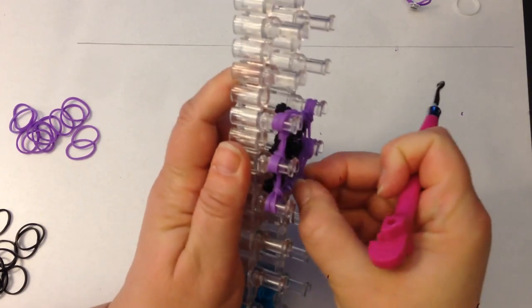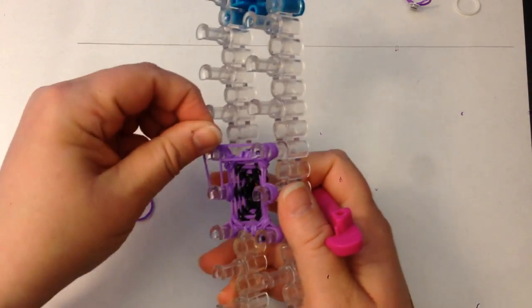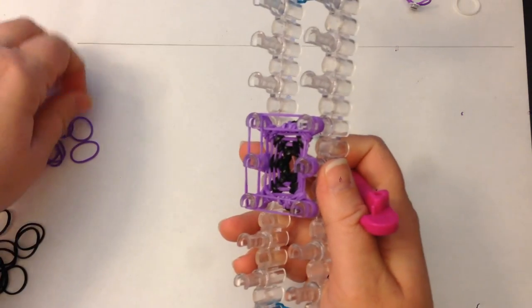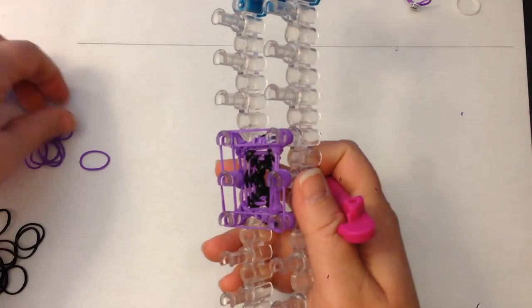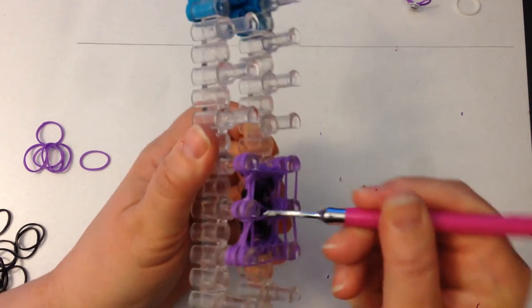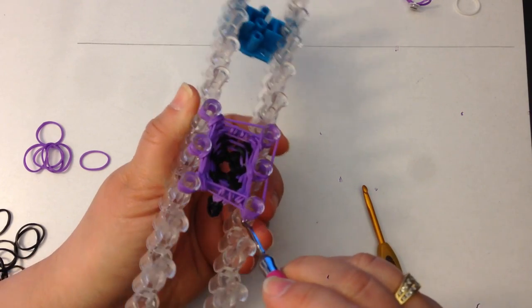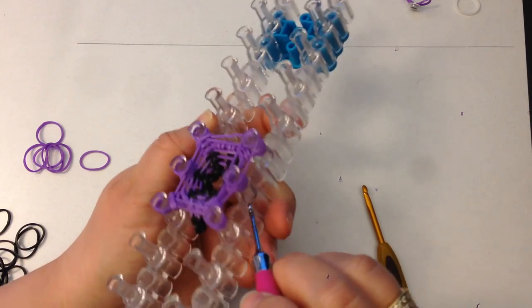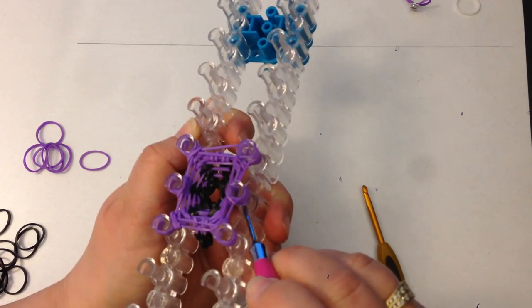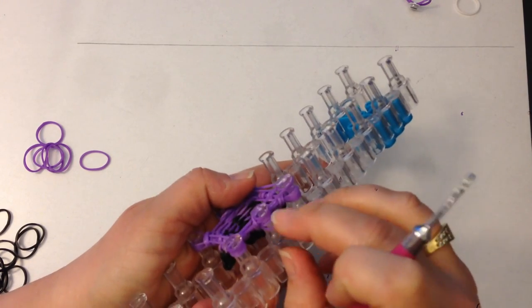Take the bottom two and loop over. Push everything down. I'm going to do row eight which is purple. Push everything down. And the bottom two purple and loop over.